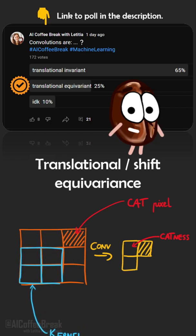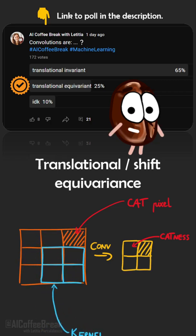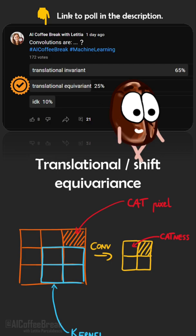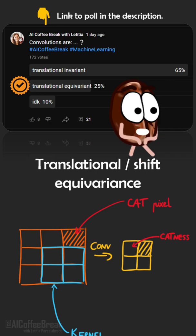With the sliding kernel, this is exactly what happens. So convolutions are not shift invariant, but equivariant. If you got this wrong, it's ok, because these words are used interchangeably in language, except in highly mathematical contexts.